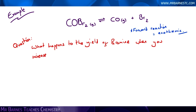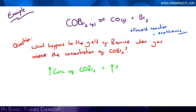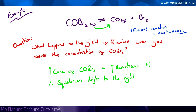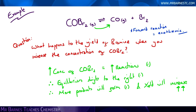Finally, what will happen to the yield of bromine when I increase the concentration of COBr2? If you increase the concentration of COBr2, there are going to be more reactions occurring. Therefore equilibrium will shift to the right, and my yield of bromine will go up because I have more products forming. You get one mark for saying more concentration of COBr2 equals more reactions occurring, one mark for equilibrium shifts to the right, one mark for more products will form, and one mark for the yield will increase.